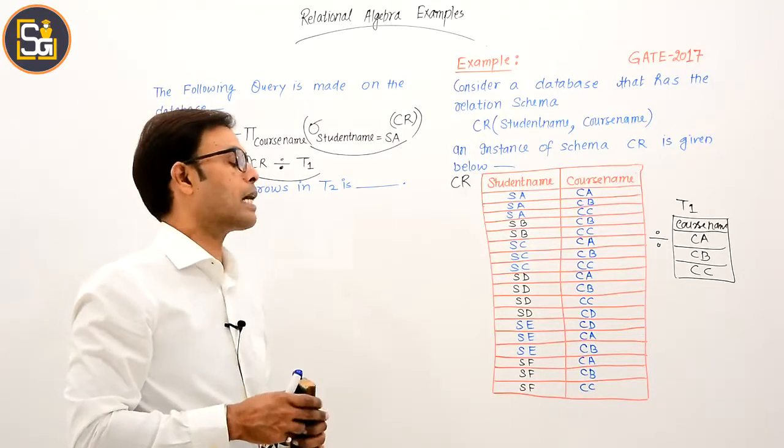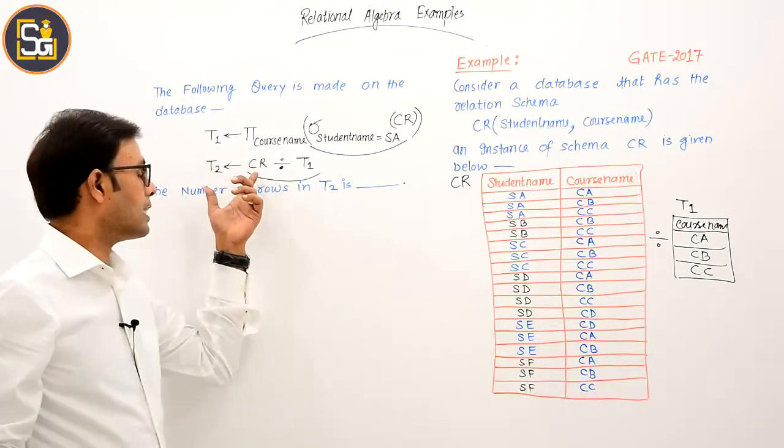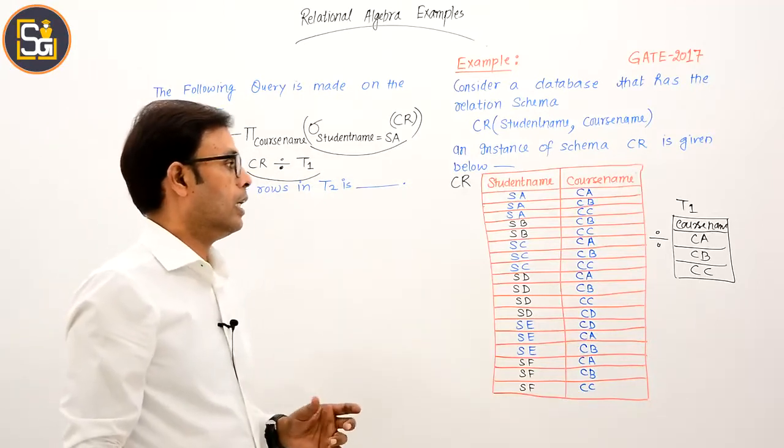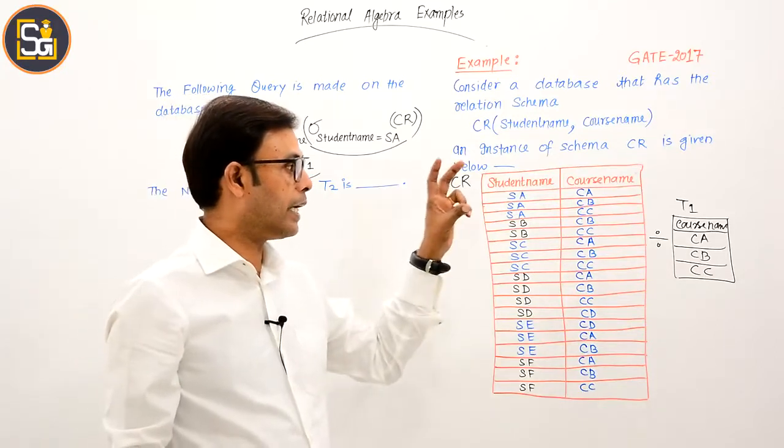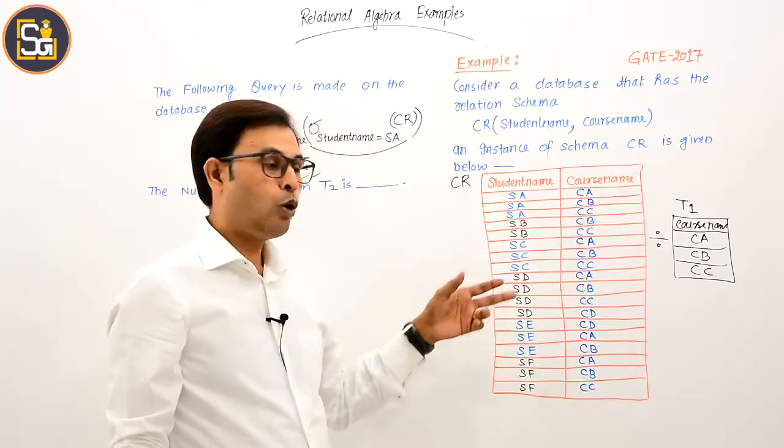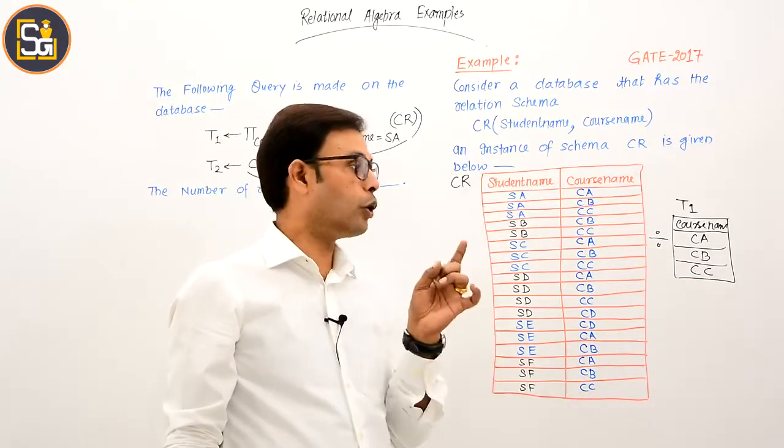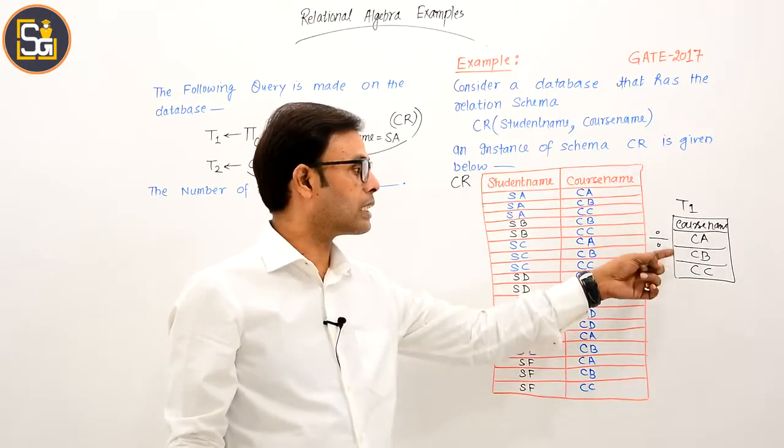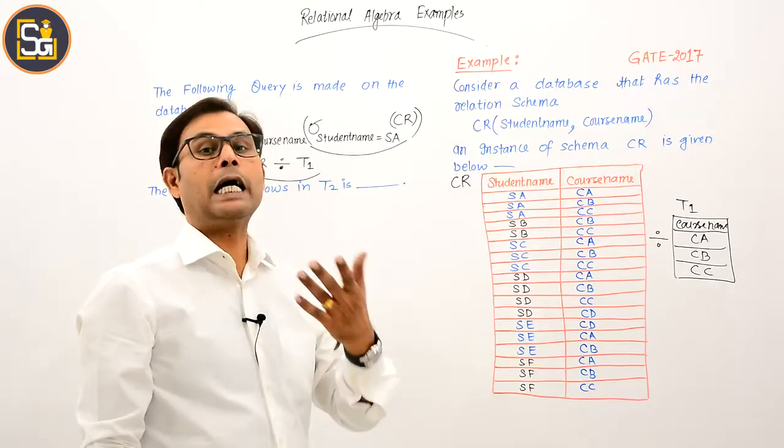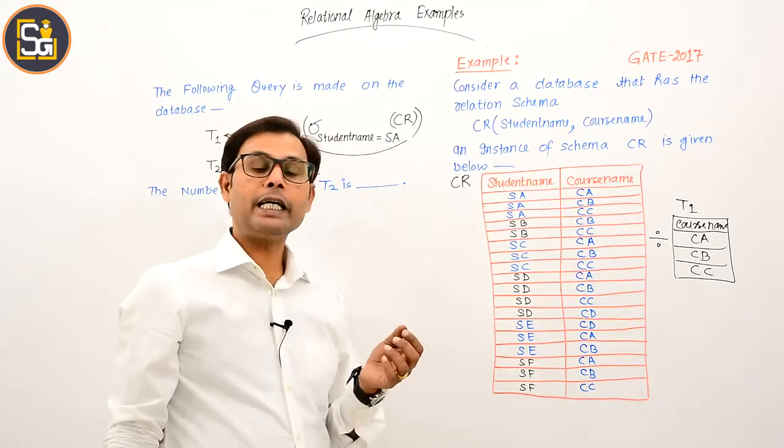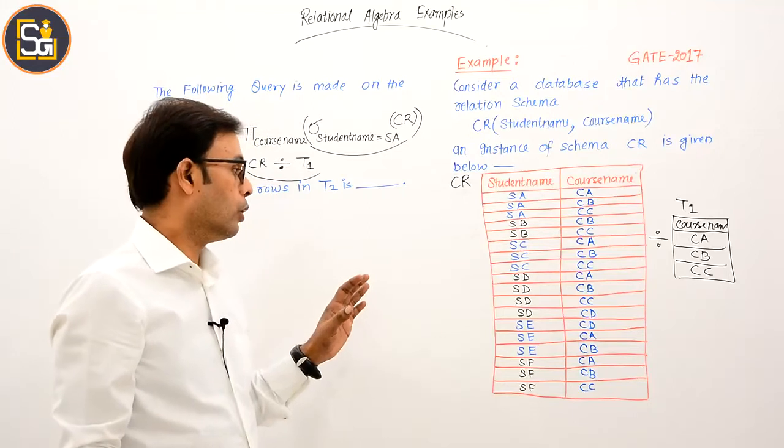First, let's understand the meaning of CR division T1. It says: its meaning is, if this is student name and this is course name, then it says that in this table, those students who have enrolled in all the three courses CA, CB, CC - their names are needed, their related information is needed.